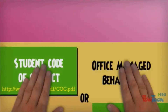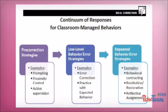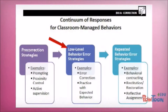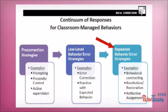Here is the response continuum for classroom-managed behaviors. First, we have pre-correction strategies to decrease the likelihood of problem behavior — these include prompting, proximity control, and active supervision. Then we move to low-level behavior error strategies, which include error correction and practice with expected behavior. Finally, we have strategies for repeated behavior errors, including behavioral contracting, restitution and restoration, and a reflective assignment.